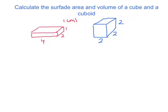The formula for volume is V equals length multiplied by breadth multiplied by height. So whether we have a cube or a cuboid, it doesn't matter — we have exactly the same formula: V equals L times B times H.